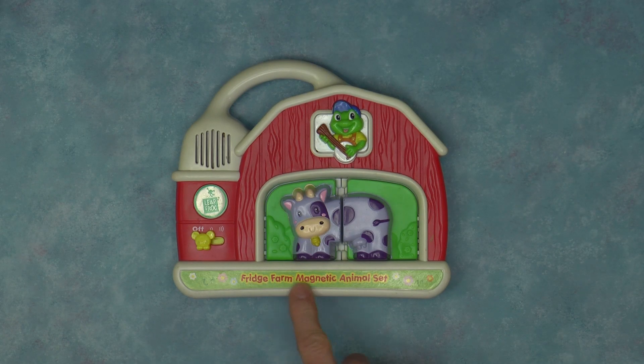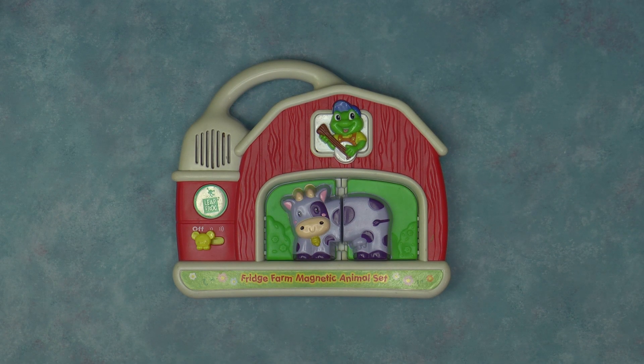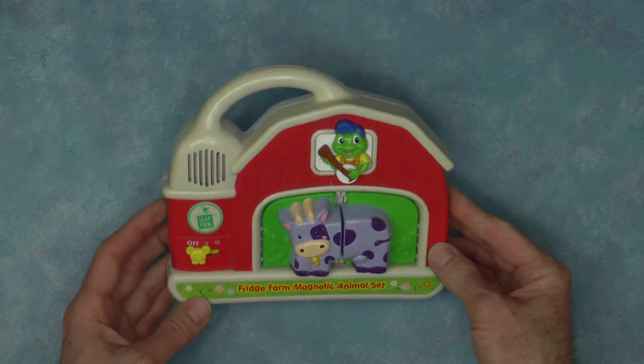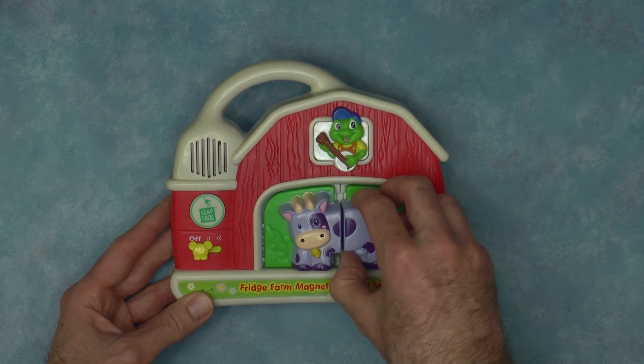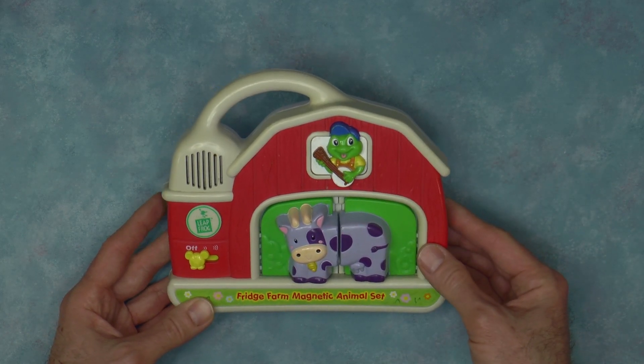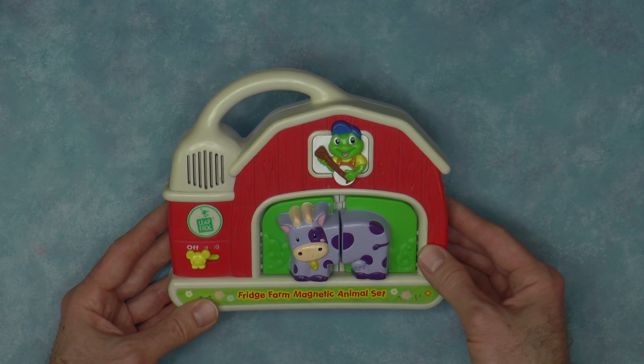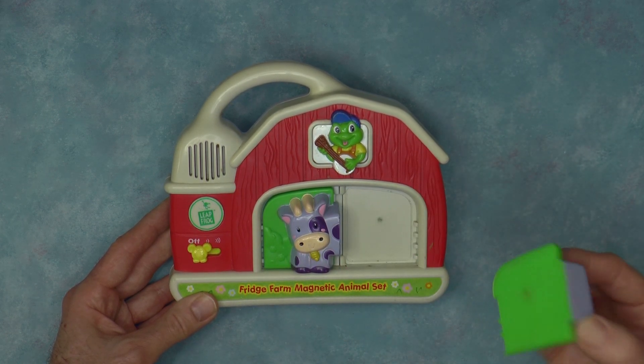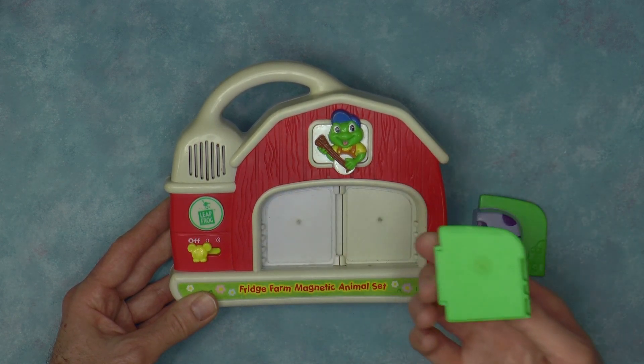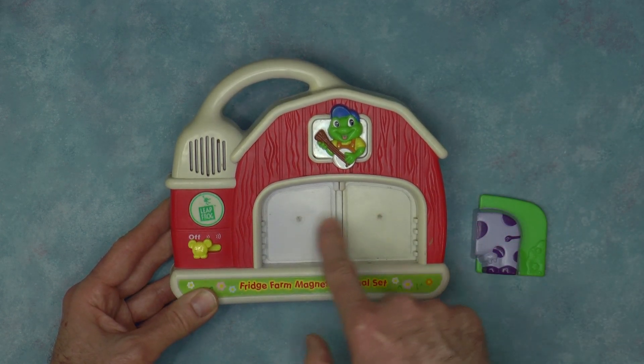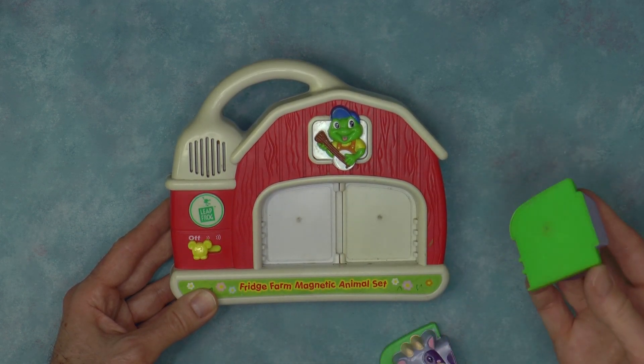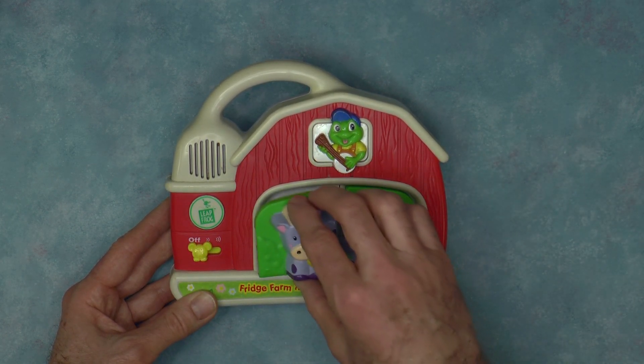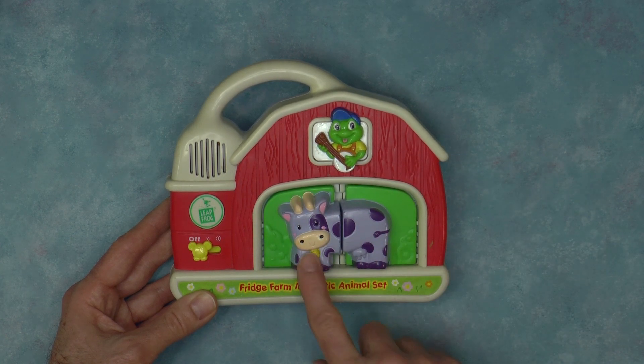Fridge farm magnetic animal set. Not too sure what that's all about but I guess this is kind of like a fridge. It's a barn but also a fridge. These are magnetic, they come right off and there are some push buttons back here. Now I'm guessing you put these on and it makes some kind of noise, possibly cow related.